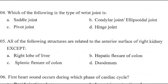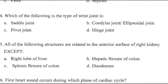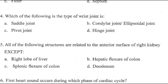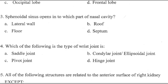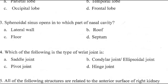Question 104: One of the following is the type of wrist joint — right answer is B, condyloid joint. Options included saddle, condyloid, ellipsoidal, pivot, and hinge joints. Question 103: The sphenoidal sinus opens into which part of the nasal cavity? Right answer is B, roof.